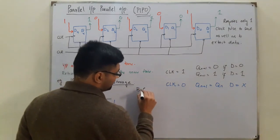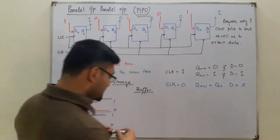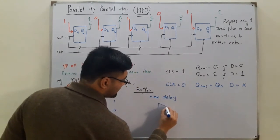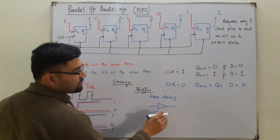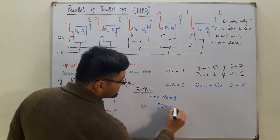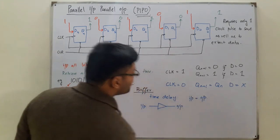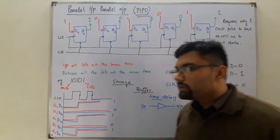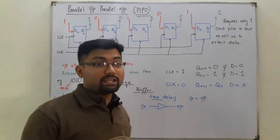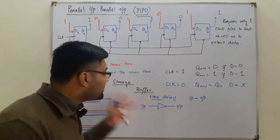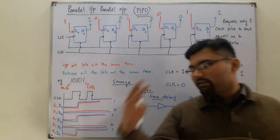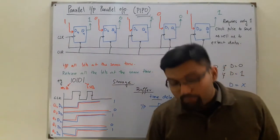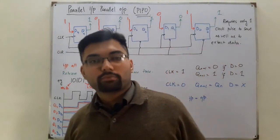PIPO is also used as a buffer. A buffer refers to a time delay, represented by a symbol without a bubble — meaning input equals output. The purpose is to introduce a time delay between two operations. This is commonly encountered in microprocessor courses, and we will study it in detail when we cover microprocessors.